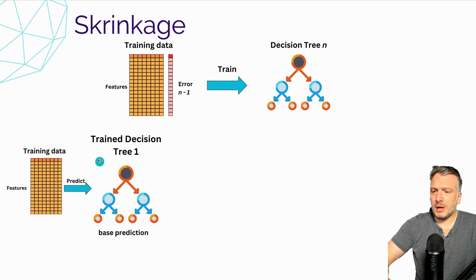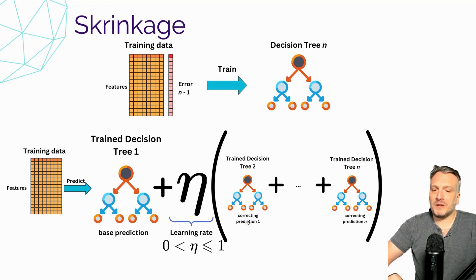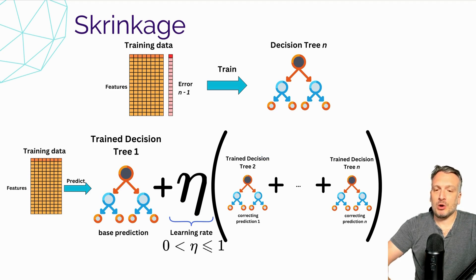When we are predicting with our training data, we have the base prediction from the first initial tree, and all the remaining trees are shrunk compared to their original values. This means that each correction added to the initial prediction will be somewhat minimized, so each new tree added to the ensemble will have a minimal impact on correcting — and potentially impacting — the quality of the ensemble model.